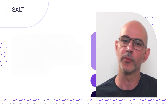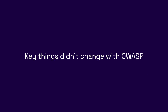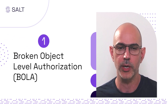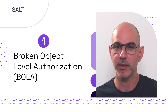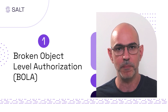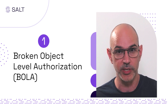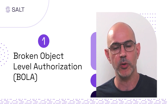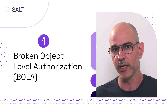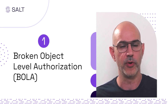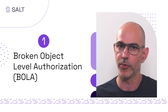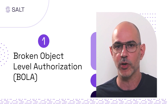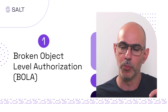So what didn't change from the OWASP API 2019 version? BOLA, or Broken Object Level Authorization, maintained its ranking as the most impactful vulnerability, and rightfully so. One of the major things that APIs do is expose resources. If you can access a resource — whether for a read or write operation — where you don't have permission to do so, that is a very serious vulnerability, and that is what BOLA is.